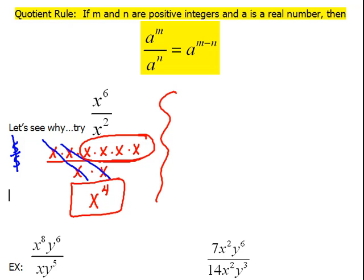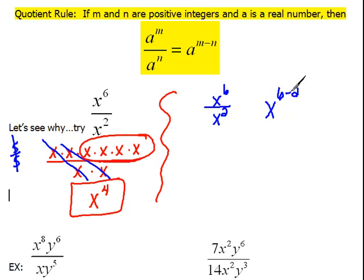Now if we use the rule — the rule says when you're dividing like bases, you subtract the exponents. I am dividing like bases here because I've got x to the 6th over x squared. So my answer will be the base x raised to 6 minus 2, which is 4th power. So it absolutely works.